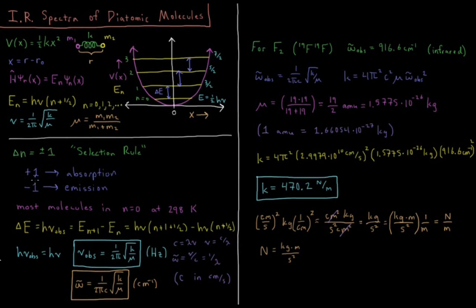When delta n equals plus one, our final n is greater than our initial n by one. That's an absorption. We have absorbed a photon of energy, and it has pushed us up one more quantum in energy.